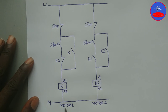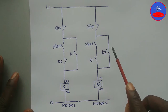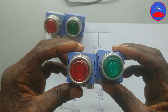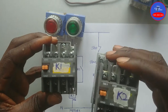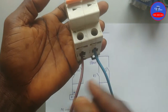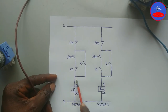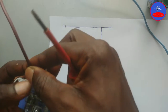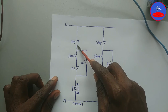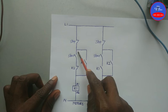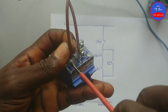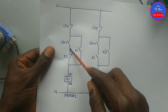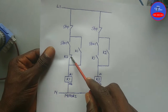This means that when Motor 1 and Motor 2 are both running and we stop Motor 1, there is no way we can restart Motor 1 unless we stop Motor 2. Let's see the wiring. These are Motor 1 stop and start buttons, Motor 2 stop and start buttons, K1, K2, our supply breaker, live and neutral. We are wiring Motor 1 from live; it comes to one side of the stop button, from the other side of the stop button it goes to one side of the start button.